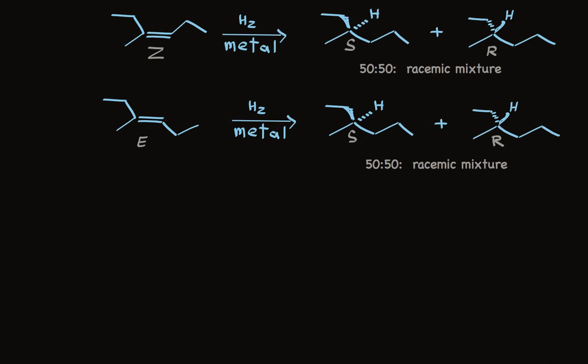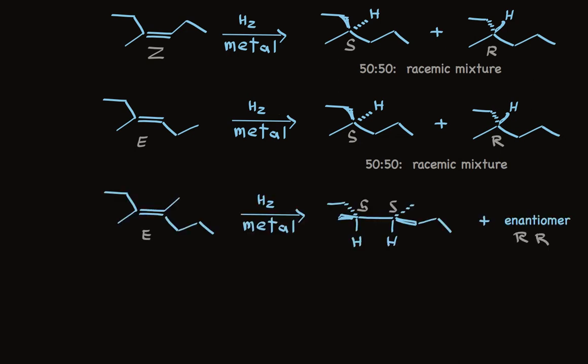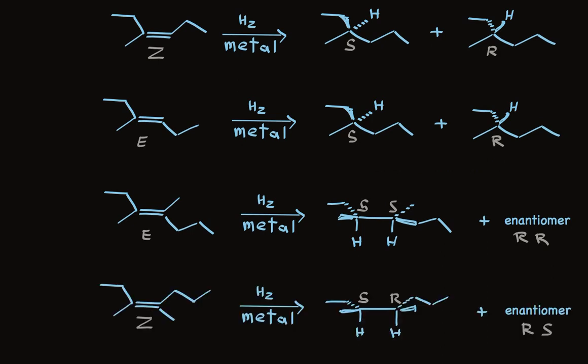However, take a look at this example where two stereogenic centers are formed. Upon catalytic reduction, the E alkene makes the SS stereoisomer and its enantiomer, the RR stereoisomer. On the other hand, when we start with the Z alkene, we make a different pair of enantiomers — we make the SR and RS enantiomers. So we see that because we have syn addition, when we're creating two stereogenic centers simultaneously, this reaction is stereospecific. E and Z alkenes give different stereochemical outcomes.